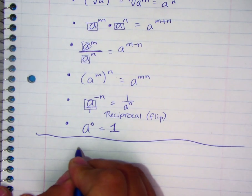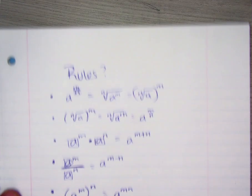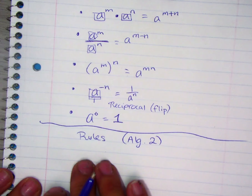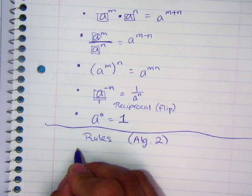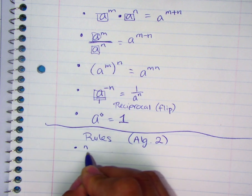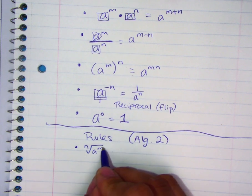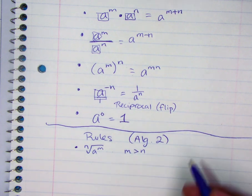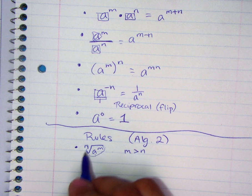Then we move on to the rules of Algebra 2. You're going to use the Algebra 1 rules along with three more. One of the new rules is: if you have a root of a base with an exponent, and the exponent on the inside is greater than the root, you need to understand there are that many of the base inside, and you take out groups of that amount.